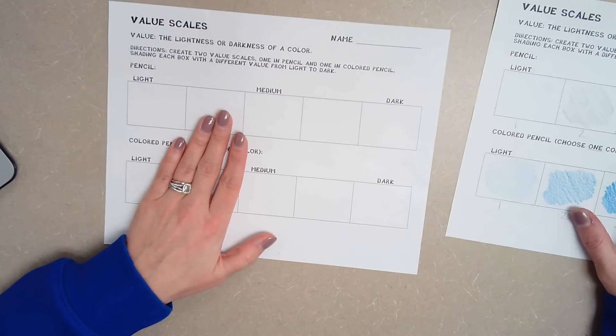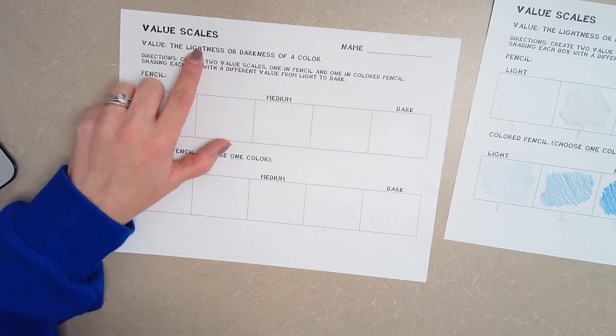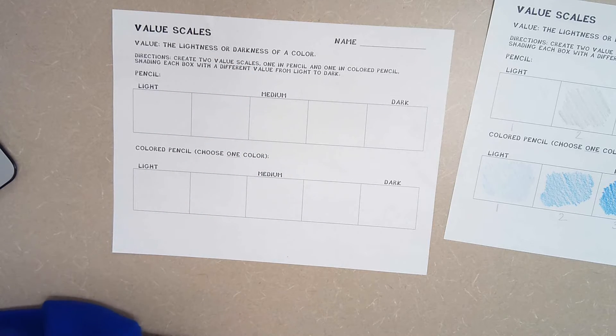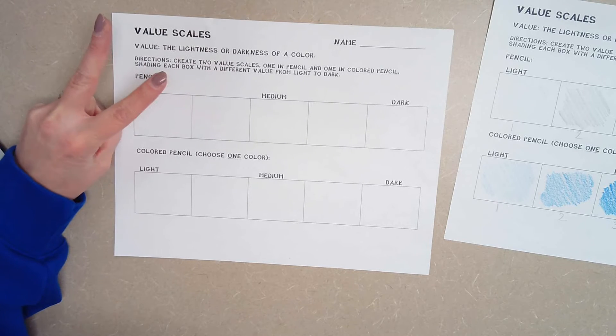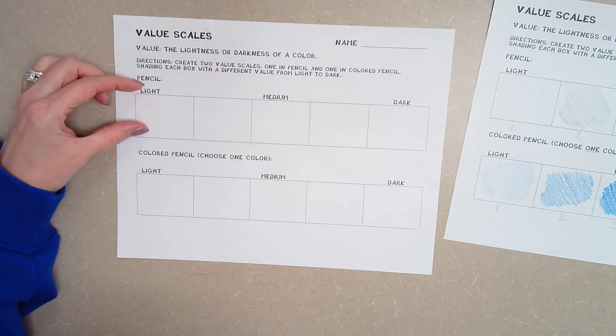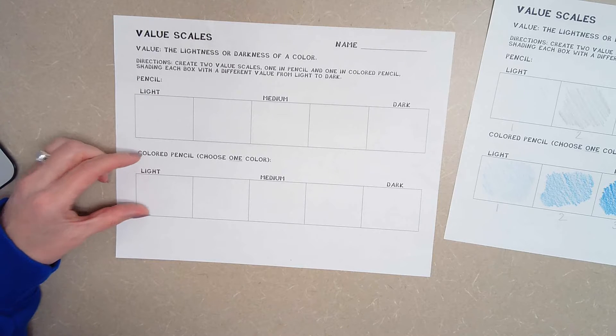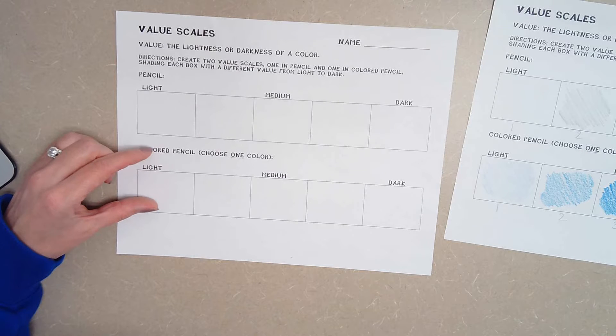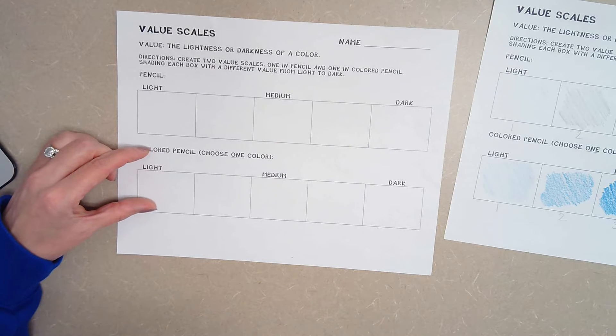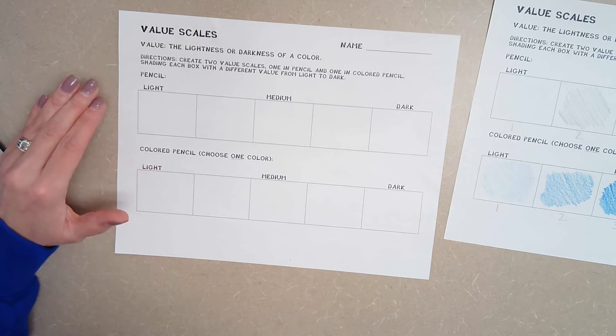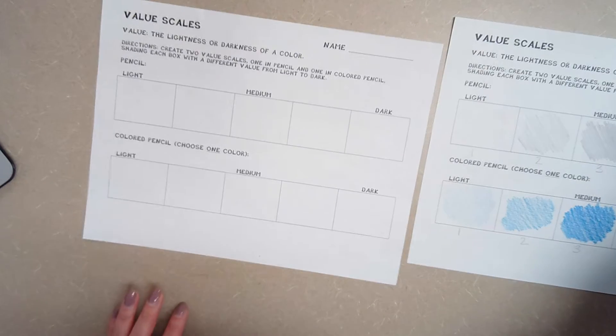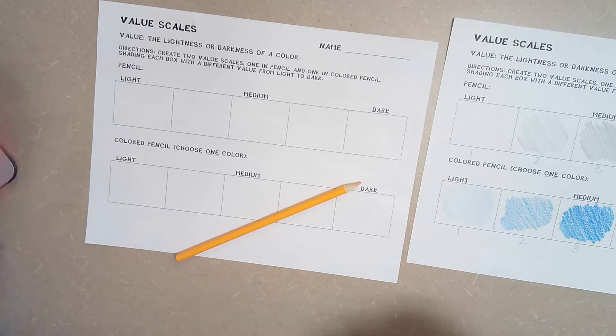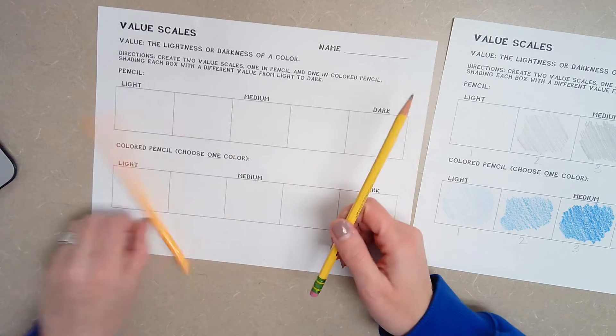So value scales. Value is the lightness or darkness of a color. What we're going to do is create two value scales, one using pencil and one using colored pencil. If you don't have colored pencil, you can still do this using a crayon, but you cannot use marker. No marker. So I am going to get out a few colors here. I'm going to use this one for my colored pencil and I need a regular pencil. There we go.